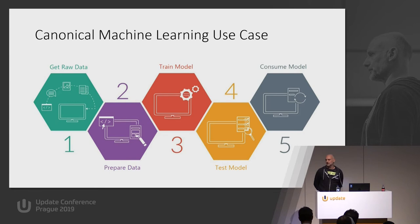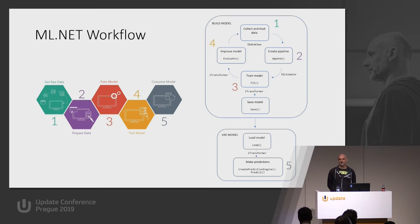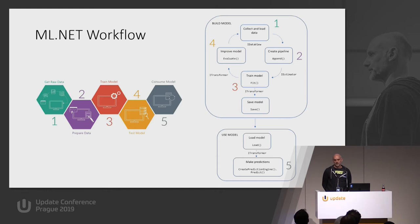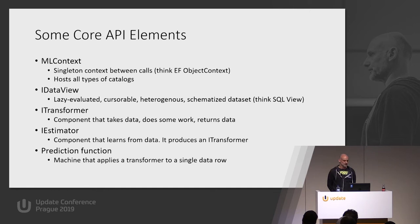Let's map that typical use case on the ML.NET API. There is an API to work with data, prepare data, train and evaluate models, and save as a zip file. Core API elements: you always need to create an ML context — that's the catalog where everything starts, like the object context in Entity Framework. There's a rich IDataView API to work with data, components that transform data, and prediction functions which are what we use in our apps.